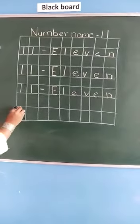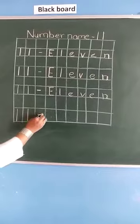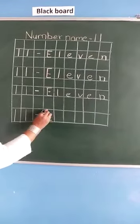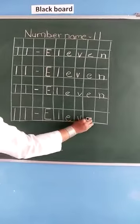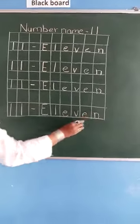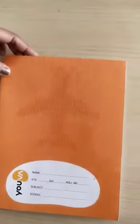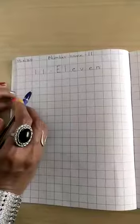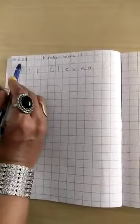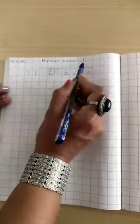Again read this line, write down here, E, L, E, V, E, and N, 11. Now take out your notebook, in that put the date, number name 11.